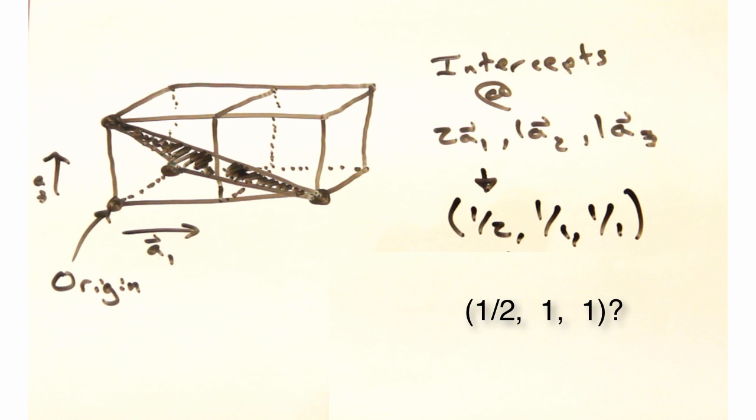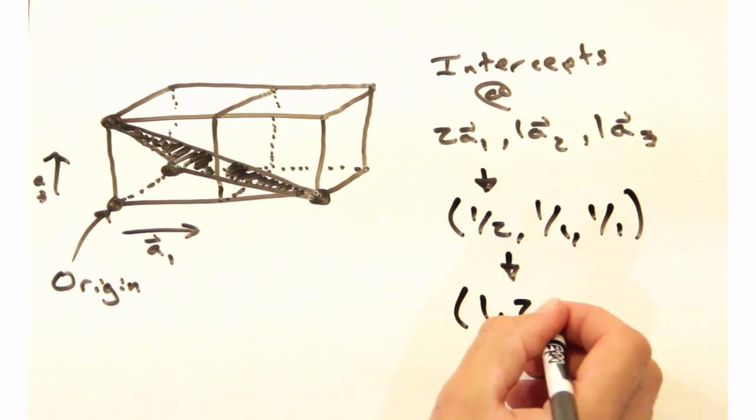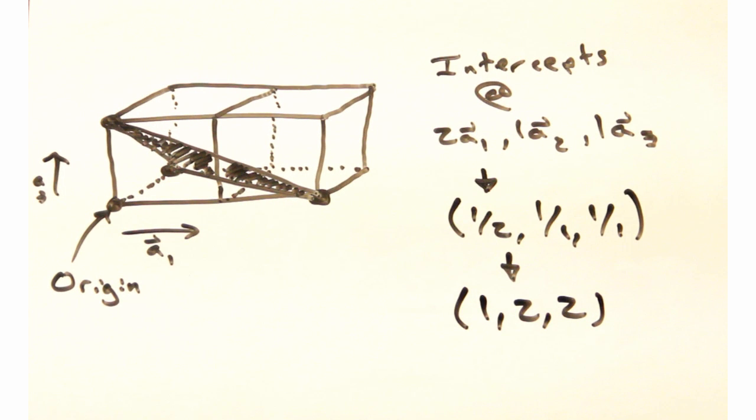You're almost right. We want everything to be an integer. Thus, we'll scale everything to the smallest integer and label this plane as the 1, 2, 2 plane.